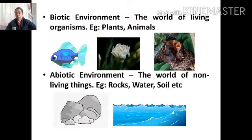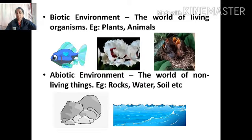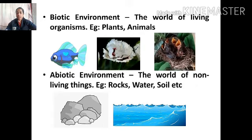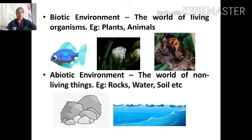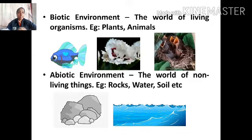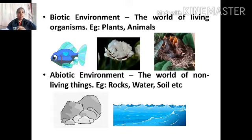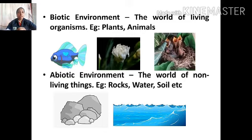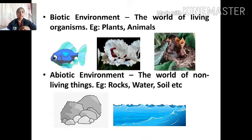We can also categorize the environment using another system. They are biotic and abiotic components. Biotic environment refers to the world of living organisms. Examples include plants and animals.